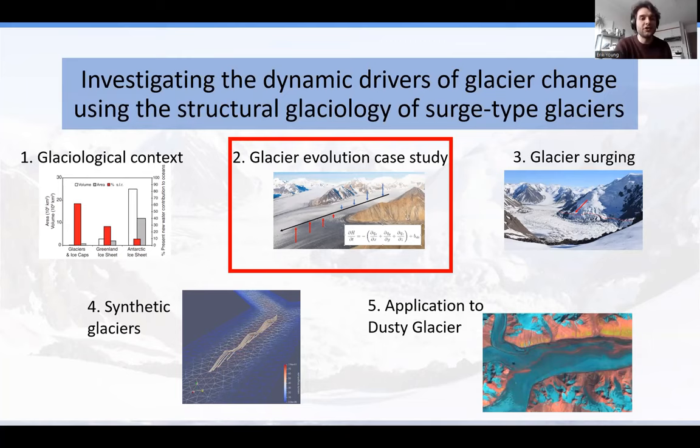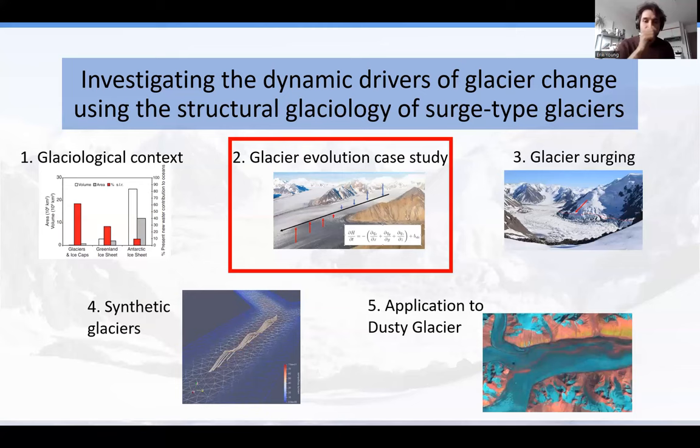Now I'd like to take a detour to look at how a large non-surge-type glacier evolves. There are two reasons: first, not everyone here is a glaciologist, so I'll take this opportunity for a tutorial on how glaciers work. Second, we want to gain a broader understanding of how out of sync climate and dynamics are in the region before delving into the more complex behavior of glacier surging. We want to start with a simpler case before working towards more complex ones.